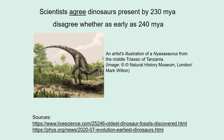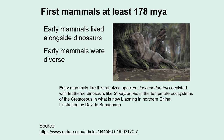Scientists agree that dinosaurs were present by 230 million years ago, and perhaps as early as 240 million years ago. The first mammals date to at least 178 million years ago, and these early mammals lived alongside dinosaurs. These early mammals were quite diverse early on.